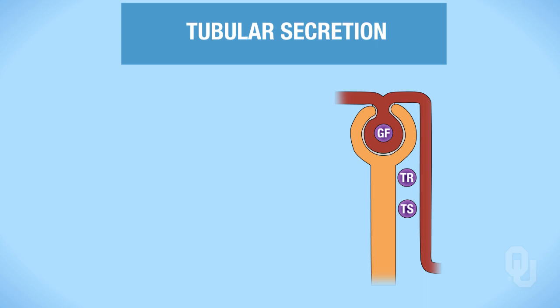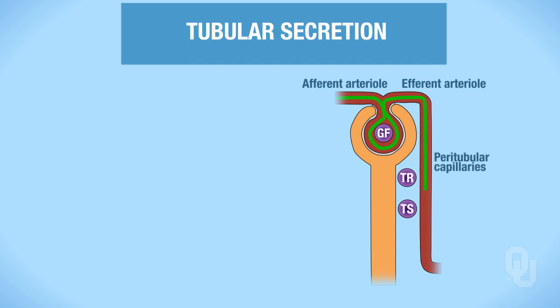You have plasma that comes in the afferent arteriole to the glomerulus, but it does not get filtered. It goes back to the efferent arteriole, then passes into the peritubular capillaries on its way back to the heart. But some of it gets secreted into the lumen of the nephron—the tubule.